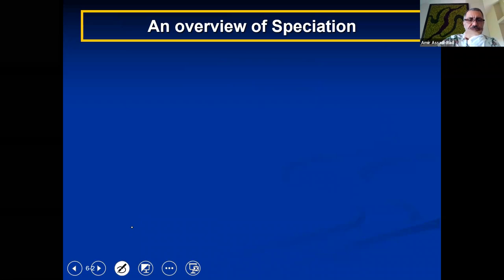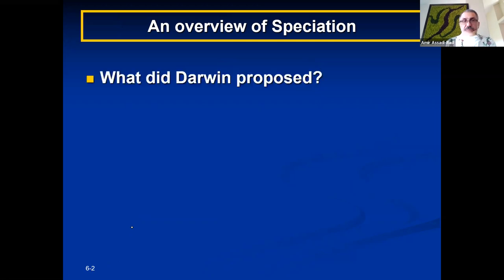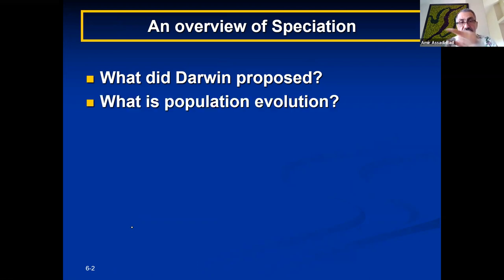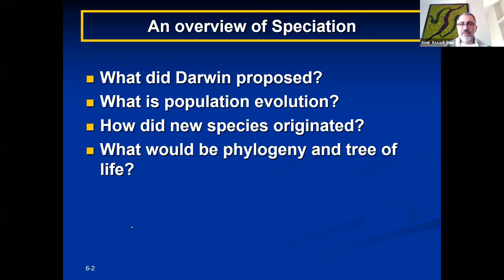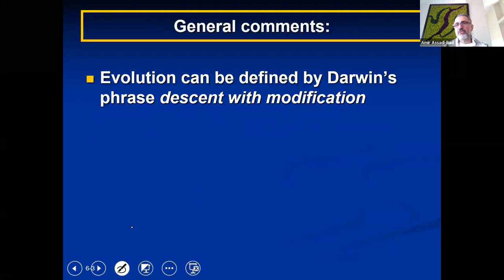So an overview of speciation — that's what this whole hour is going to be about. Number one: what Darwin proposed, then what is population evolution, how did new species originate, and what is phylogeny and the tree of life? That's pretty much what I will talk about for the next hour.